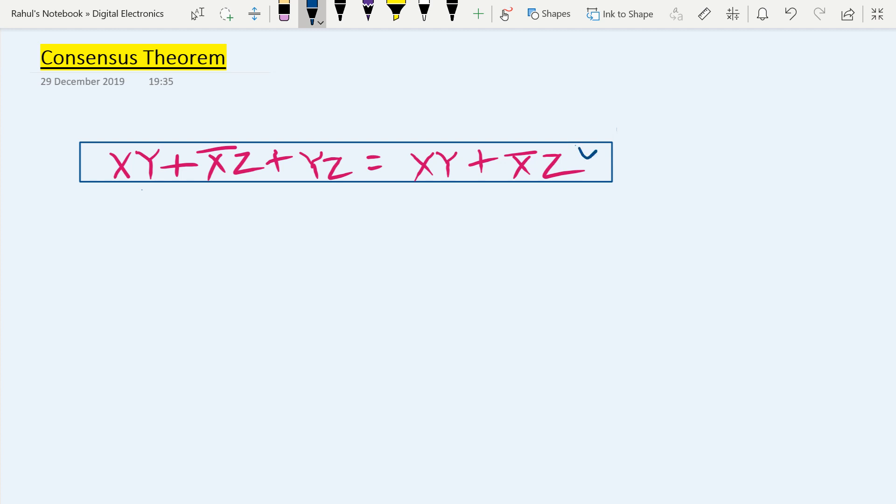You can remember this theorem by solving questions repeatedly, but here our need is to prove this theorem - how the left hand side part, xy plus x prime z plus yz, equals the right hand side part, xy plus x prime z.